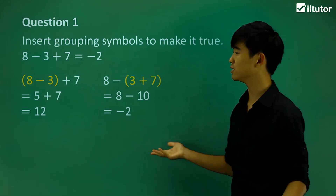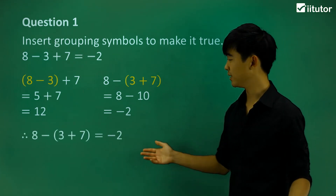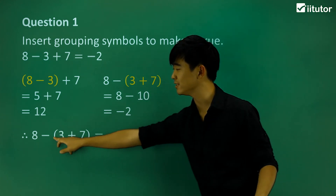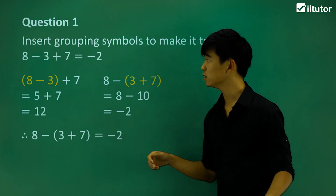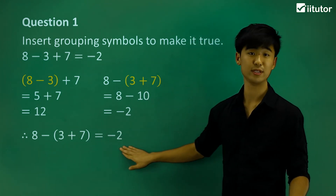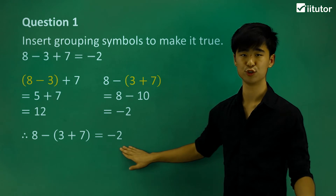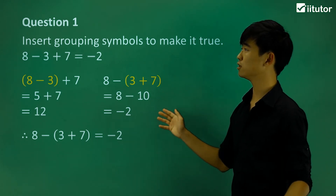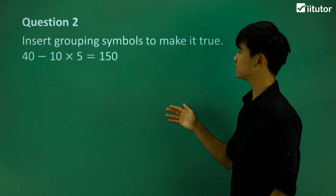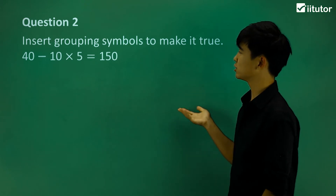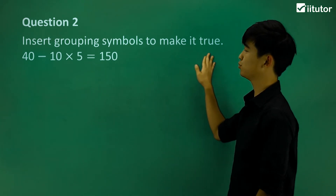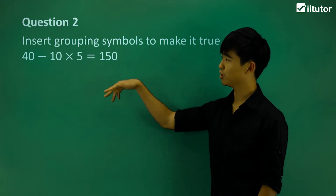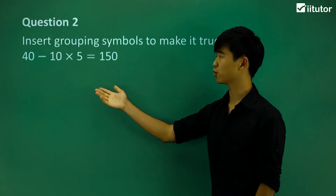So to answer this question, it's this one here — the brackets around these two numbers will ensure that this equation is true. So let's move on to the next one. A similar question: insert grouping symbols to make this equation true.